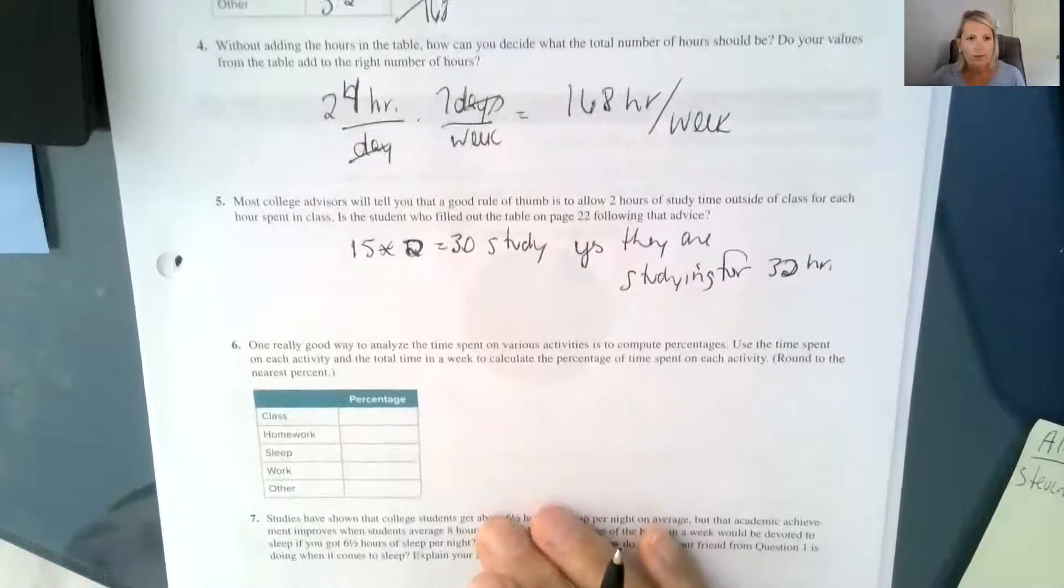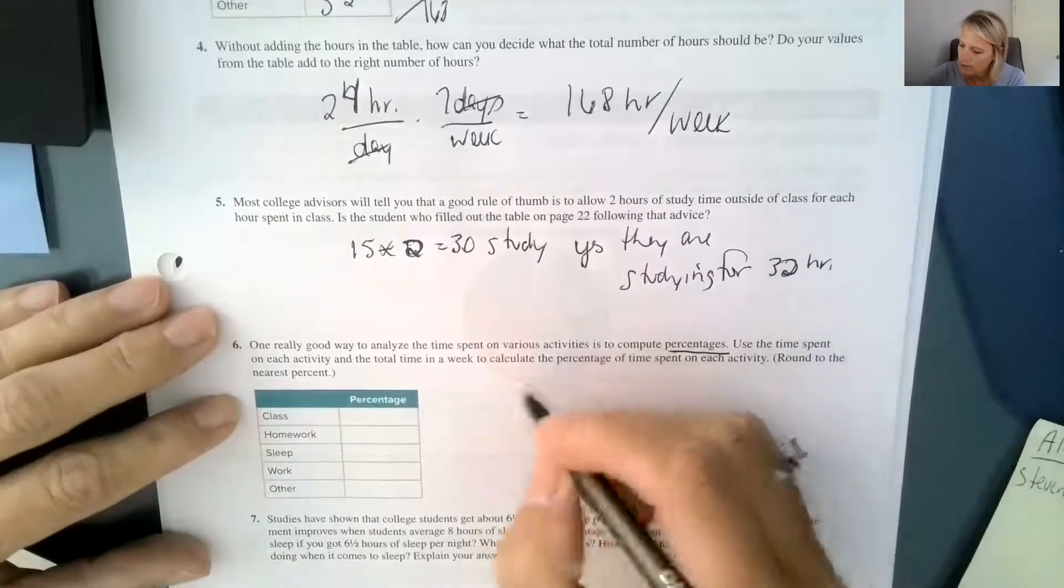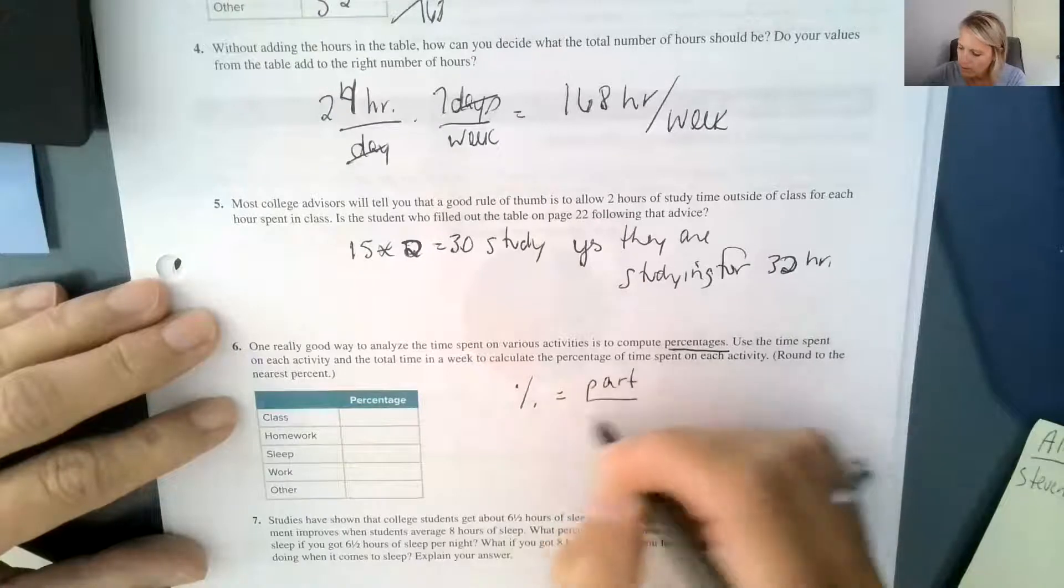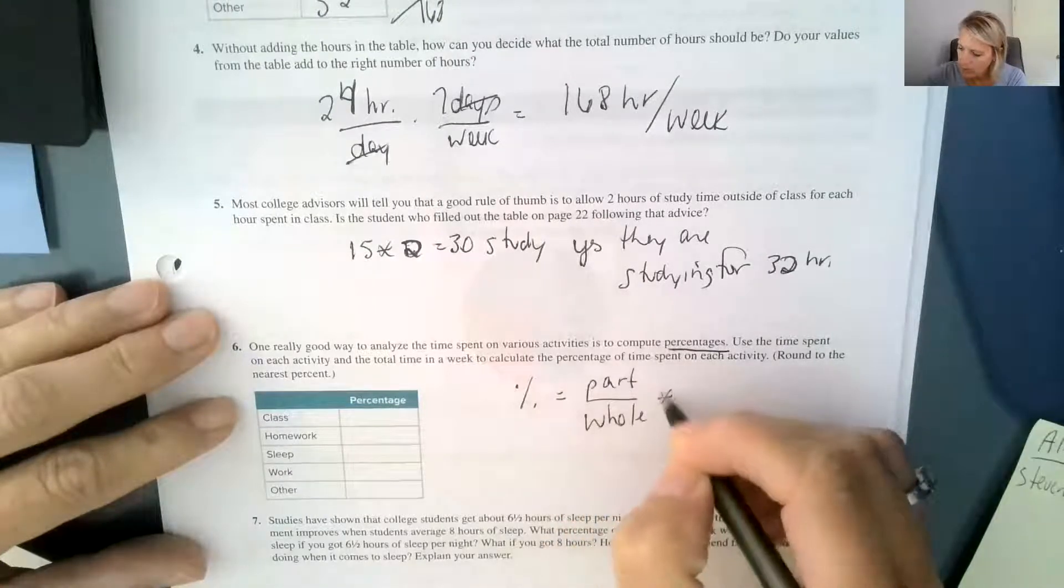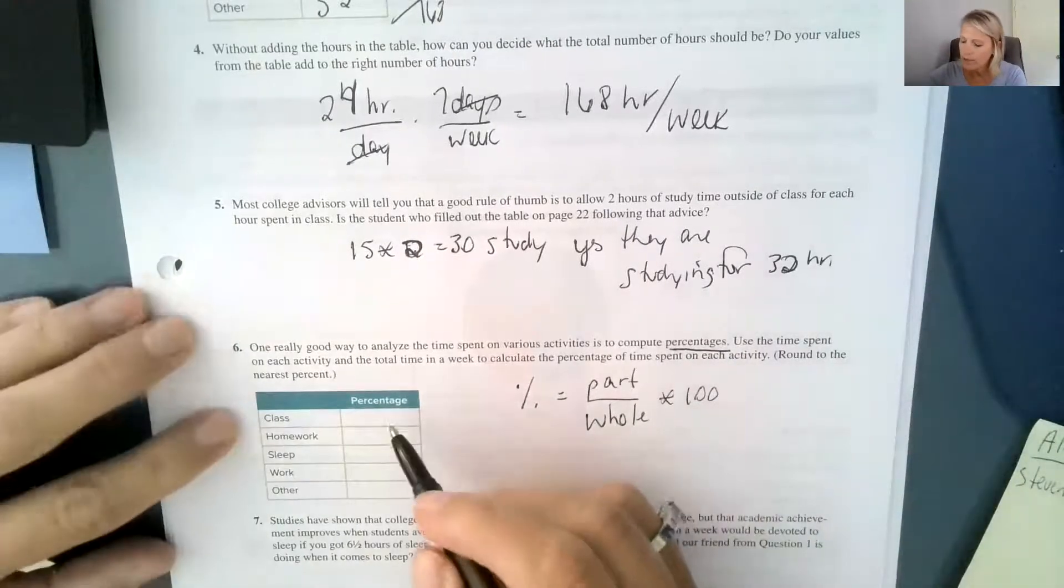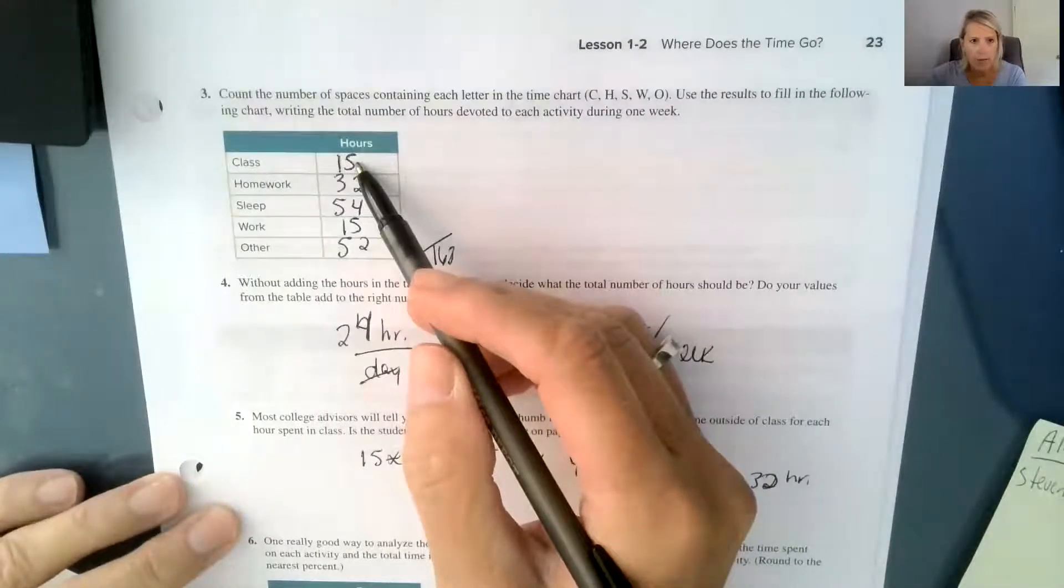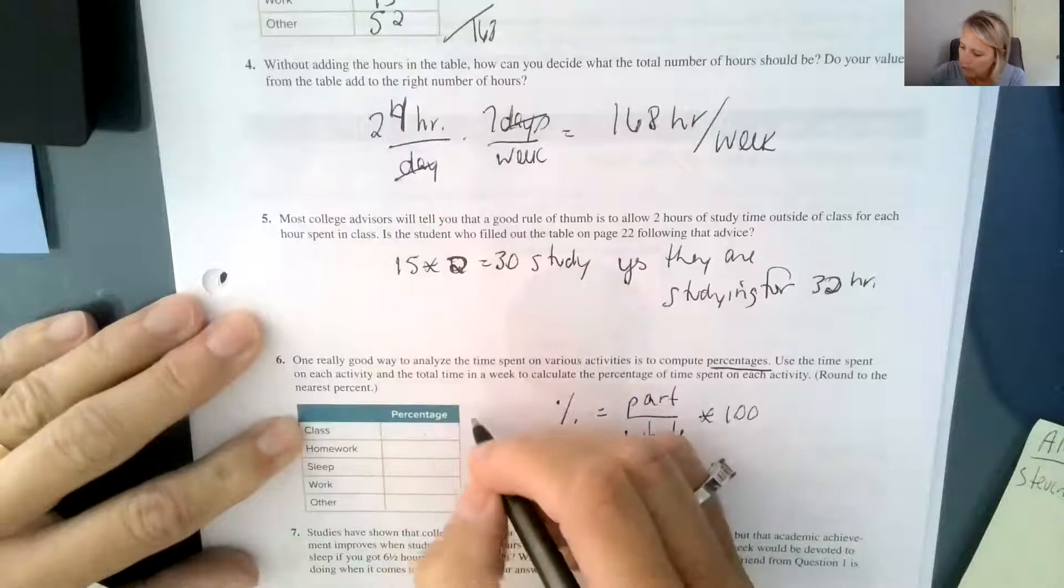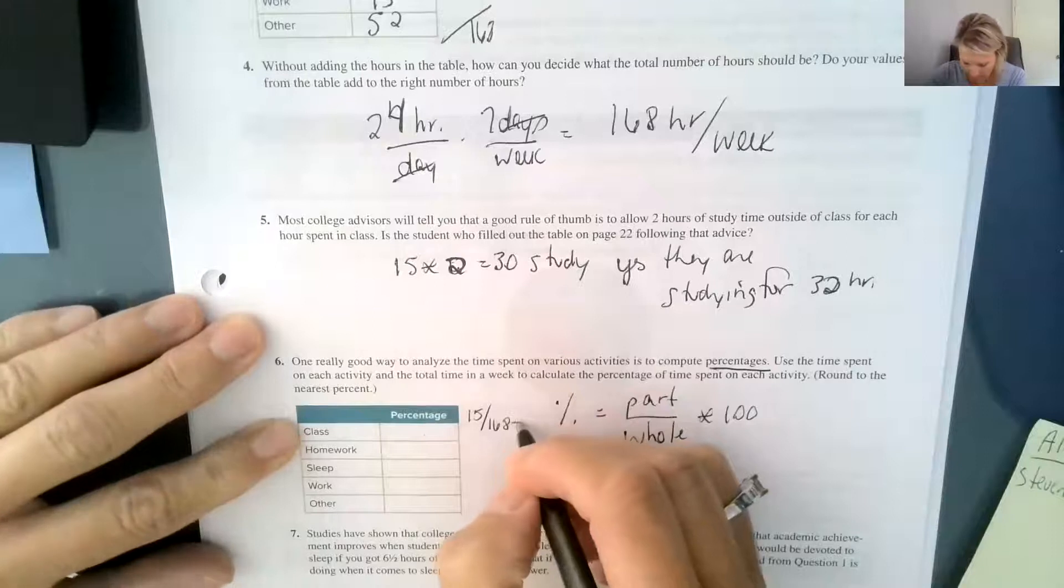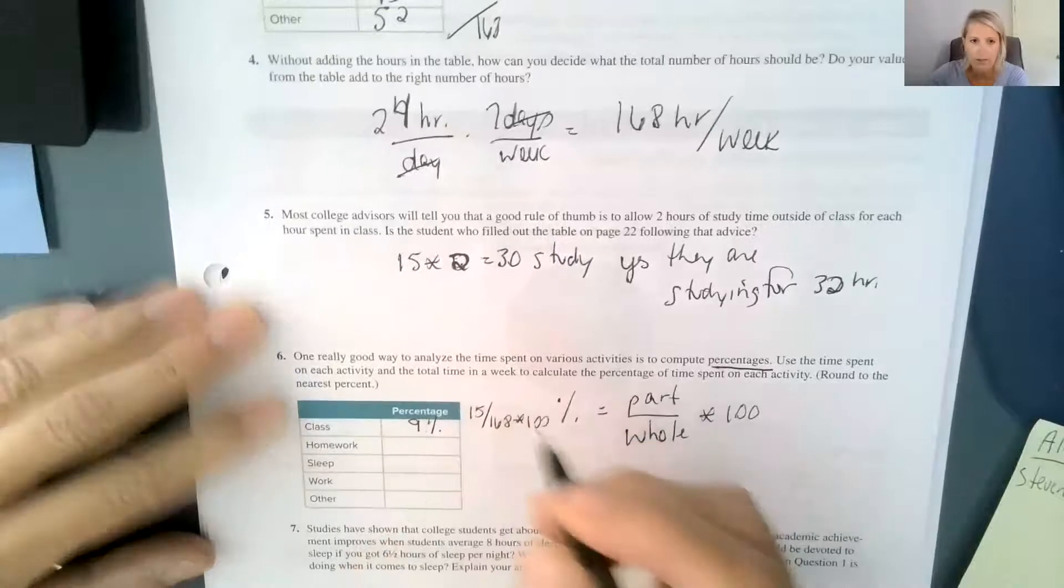One really good way to analyze how much time you're spending on different activities is by computing percentages. So we have to remember that a percentage is a part to a whole multiplied by 100 because a percent is always per 100. So if we want to figure out what percentage of time do we spend in class, we would take the part of hours that were class, which would be 15, and divide by 168, then multiply it by 100, and we would find out that it rounds up to the nearest percent of 9%.